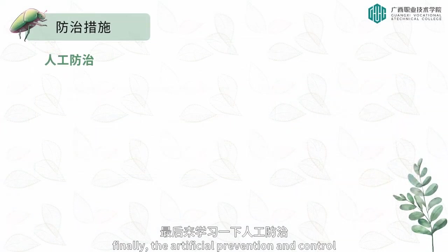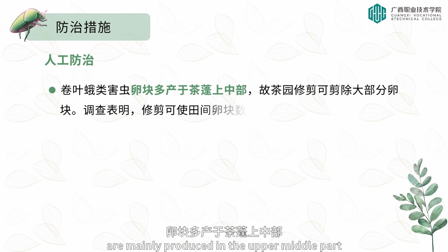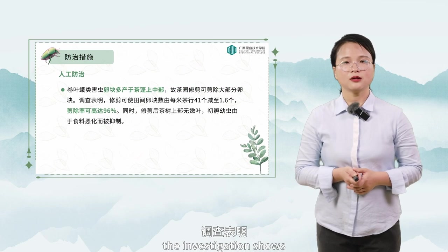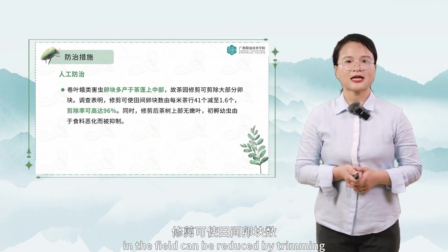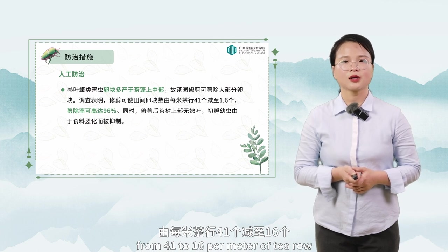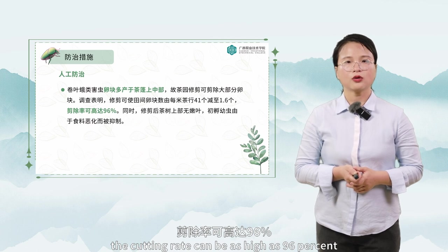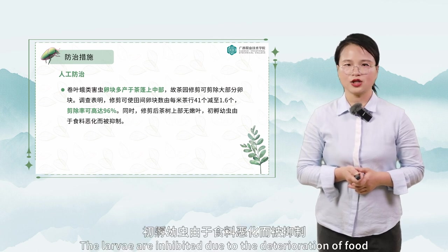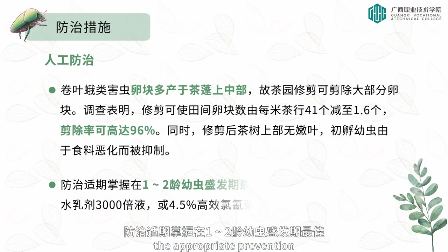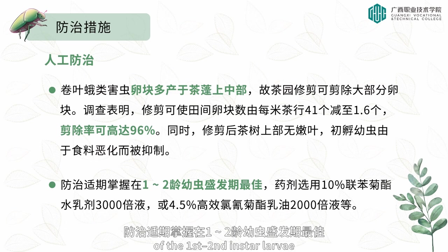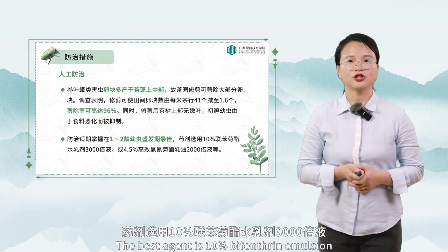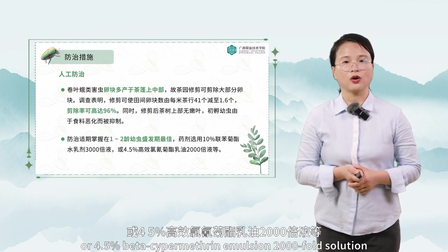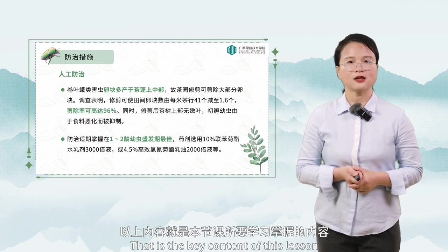Finally, artificial prevention and control. Leaf roller pests are mainly produced in the upper middle part of the tea canopy, so most egg masses can be cut off by tea garden trimming. Investigation shows that trimming can reduce the number of egg lumps in the field from 41 to 16 per meter of tea row, with a cutting rate as high as 96 percent. No larvae newly hatched on the upper green leaves remain after trimming, as larvae are inhibited due to deterioration of food. The appropriate prevention and control period is at the peak stage of first to second instar larvae. The best agents are 10 percent bifenthrin emulsion in water at 3000-fold solution, or 4.5 percent beta-cypermethrin emulsion at 2000-fold solution.